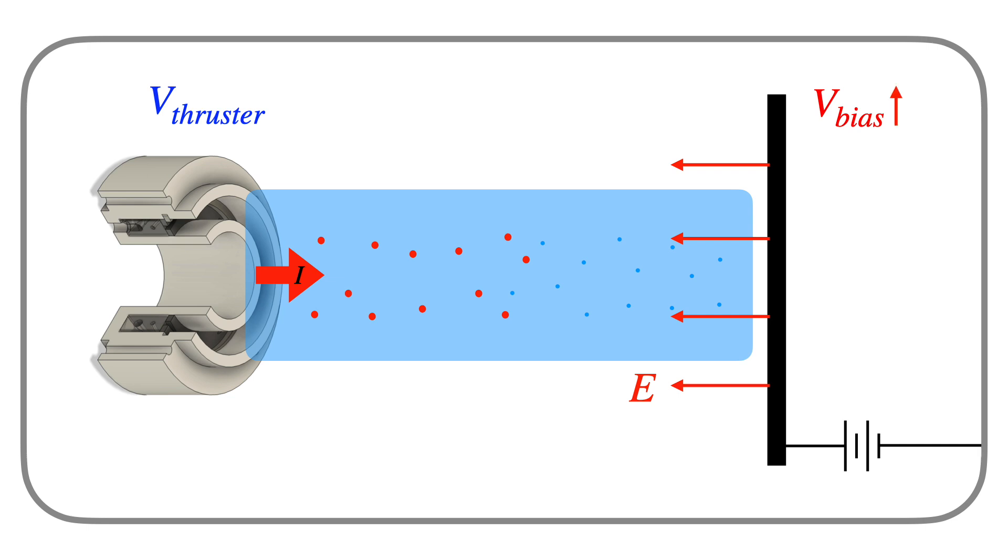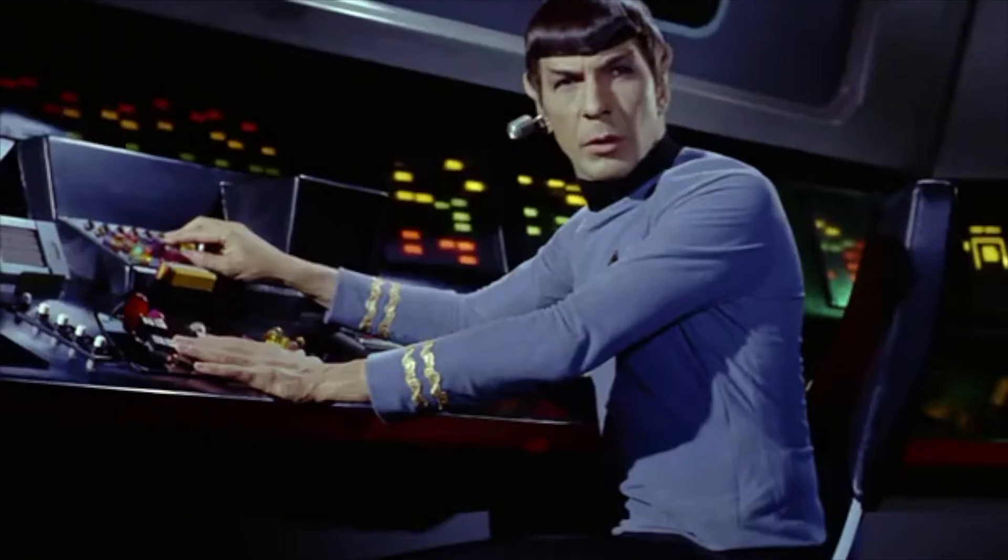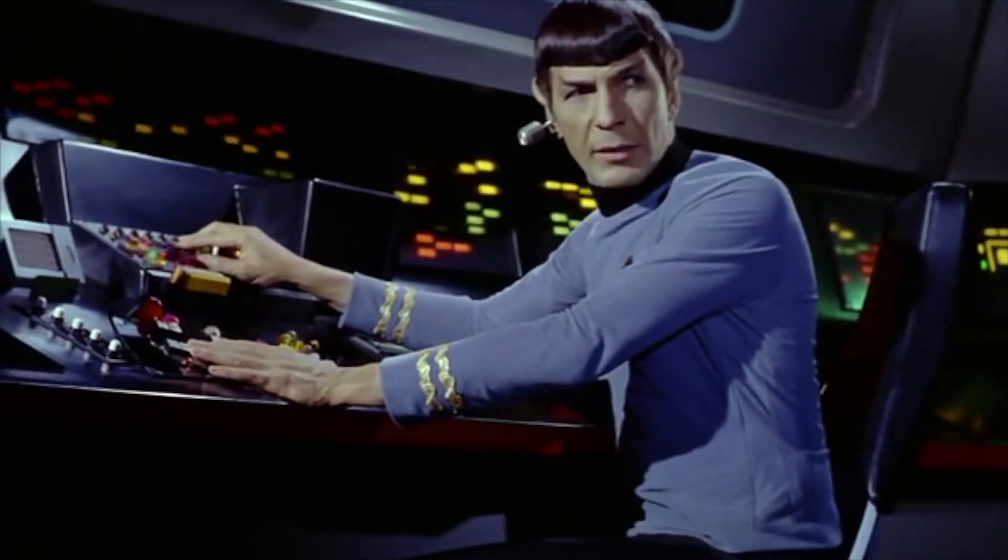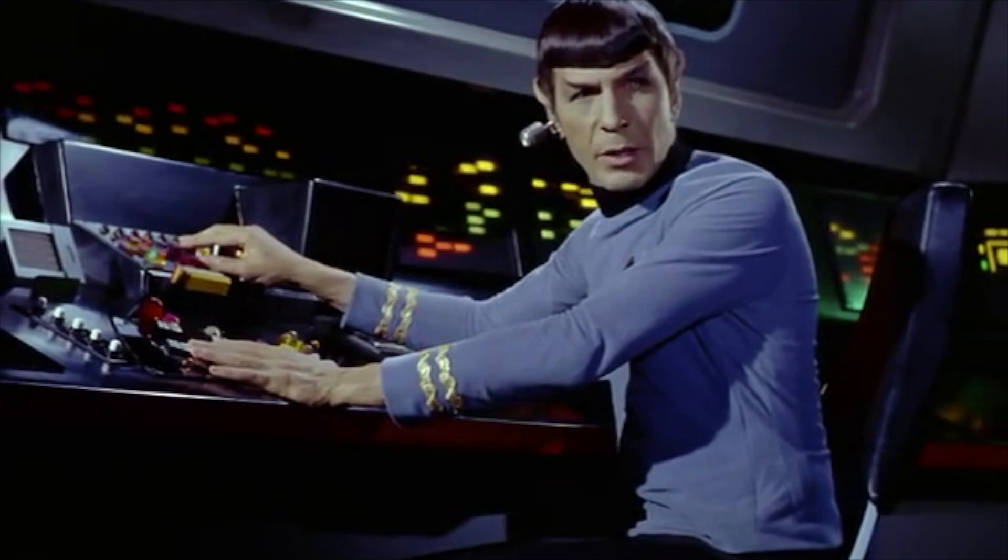So as we increase the charge on our plate, the charge on the thruster goes up by the same amount. The result of this voltage coupling is that the ions can't be decelerated by the electric field alone. Deflector shields at full power, they can't take much more of this. So what do we do next?